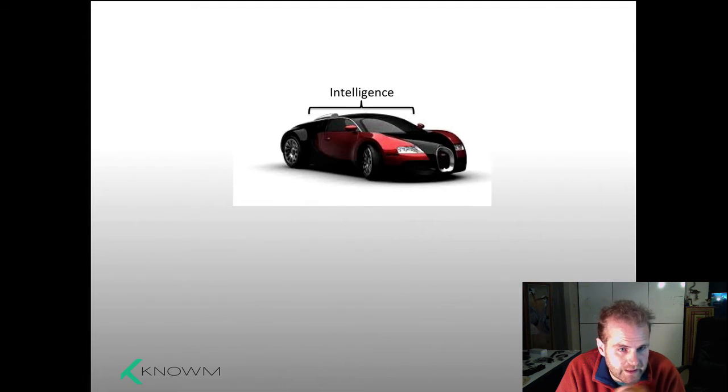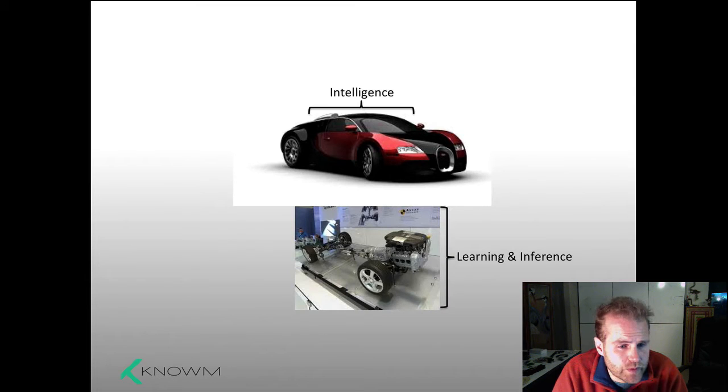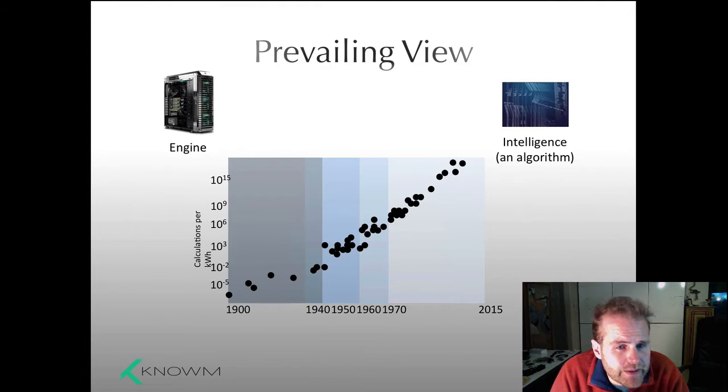Now if intelligence was a car, then learning and inference would be its engine and transmission. This is the meat of intelligence. The prevailing view is that intelligence is an algorithm—a set of equations or procedures—and the engine for achieving intelligence is our computers. Because computational power, calculations per kilowatt hour, has been increasing exponentially, we will eventually have computers able to execute intelligent algorithms to a point where we can compete with our own brains.